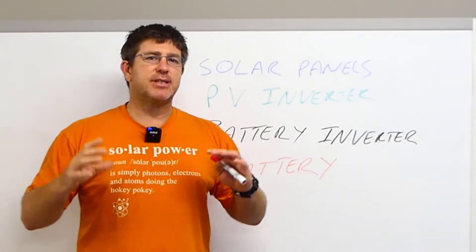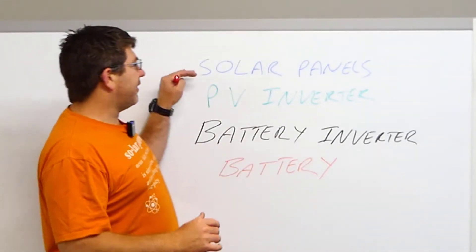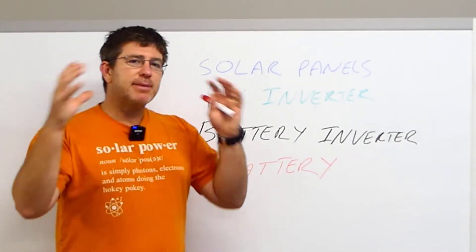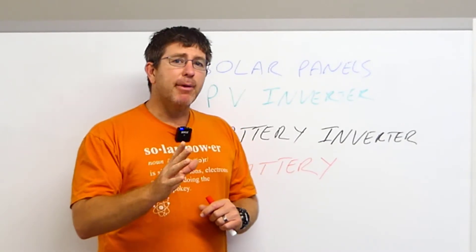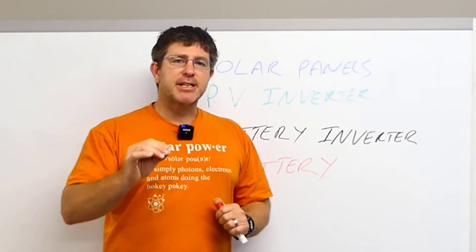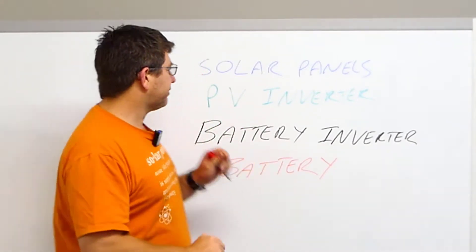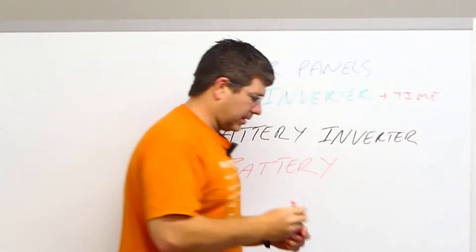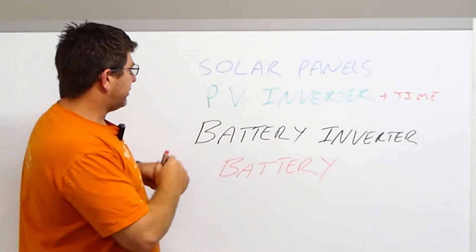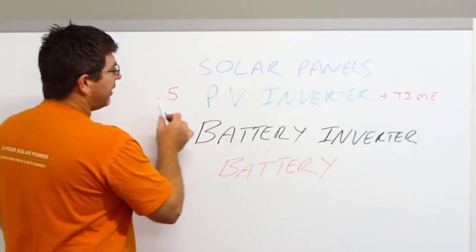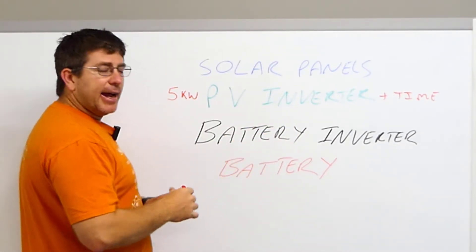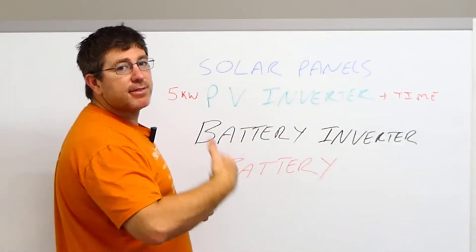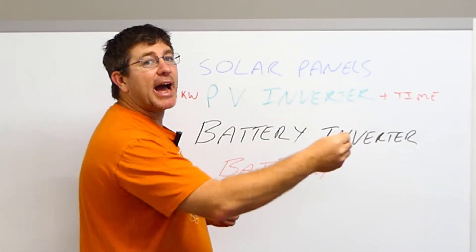Let's jump back to the whiteboard and see how this relates to solar. Everyone talks about 6.6 kilowatts of panels. In theory, if those 6.6 kilowatts of panels were put on a 6 or 7 kilowatt inverter, that's the most energy they could produce at any one moment. If you've got a 5 kilowatt PV inverter, that's the maximum peak energy you can produce at any one time. When you add time to the PV inverter, that's when you get the kilowatt hour. For example, a 5 kilowatt PV inverter at peak production can do 5 kilowatts. Add 5 sun hours — 5 times 5 is 25 — so you get 25 kilowatt hours.